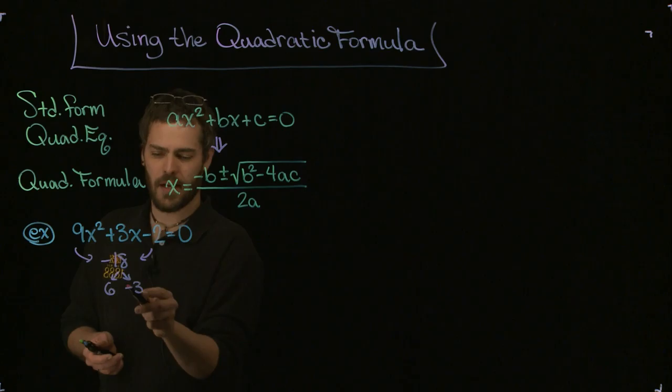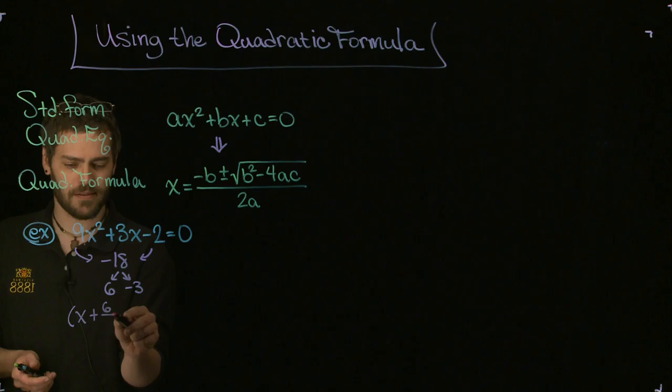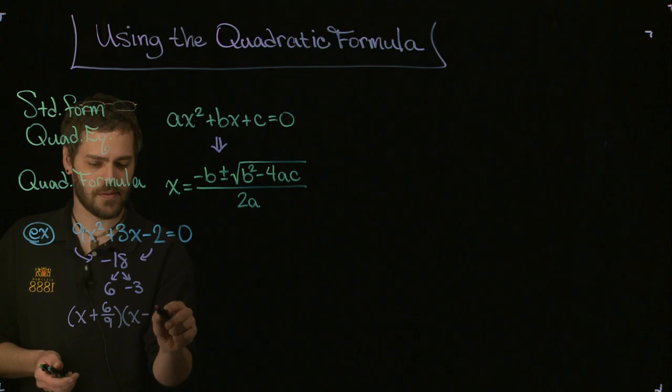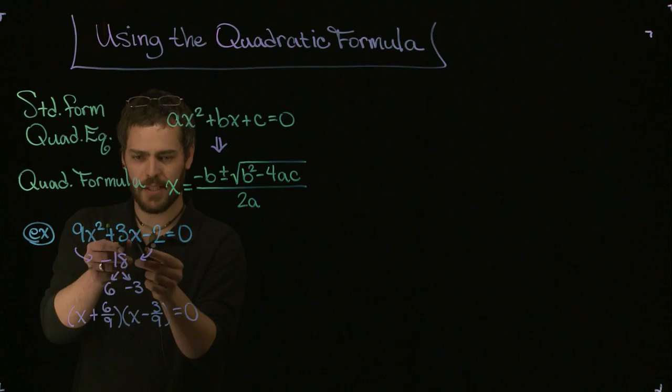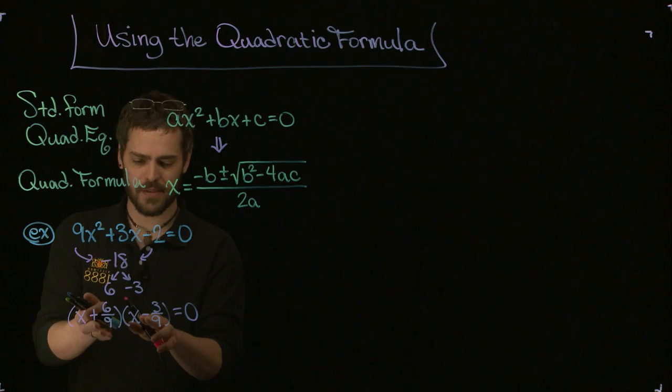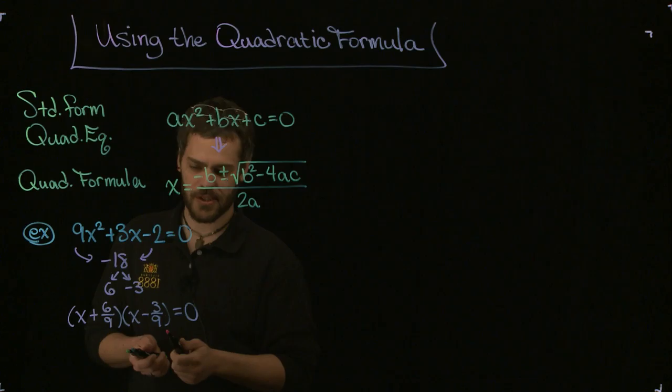Now what I do with these two guys using the rational zeros theorem is the following. I've got x plus 6 over 9 times x minus 3 over 9, and all of that is equal to 0. What I wrote down right here, these two binomials are not actually equal to this trinomial. They would be under certain conditions. However, the solutions of this are exactly the solutions of the original trinomial. The 9 came from the leading coefficient. Please go ahead and review the factoring section that I've done on method number 3 to see what I'm doing here.